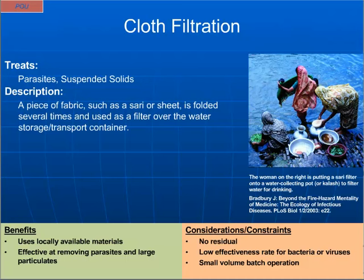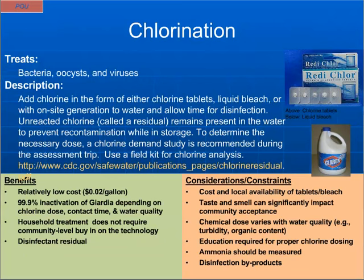The next technology is cloth filtration — another point-of-use technology. Cloth filtration will remove parasites and suspended solids. It's straightforward: use a piece of fabric folded several times as a filter, pouring the water straight through the cloth into your transport vessel. It's easy but fairly low in effectiveness. It is a small-volume batch operation, so we generally don't see it applied as a primary treatment technology — it's something communities would do themselves.